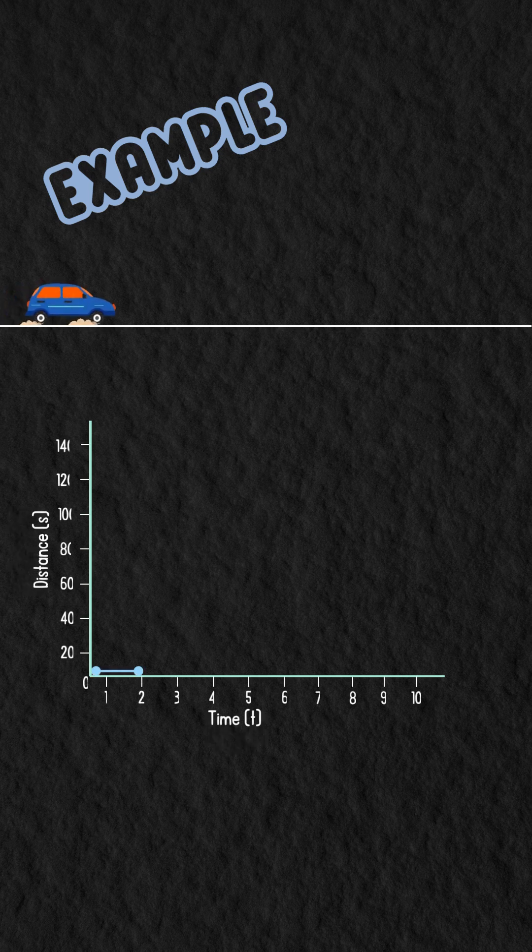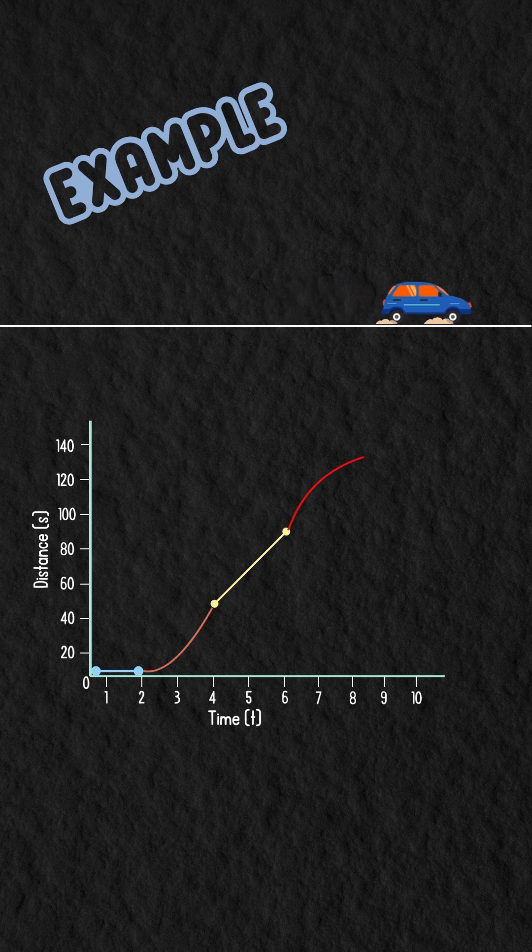For example, if a car starts at rest, accelerates, reaches a constant speed, then slows down, and stops, we can map its entire journey on the graph.